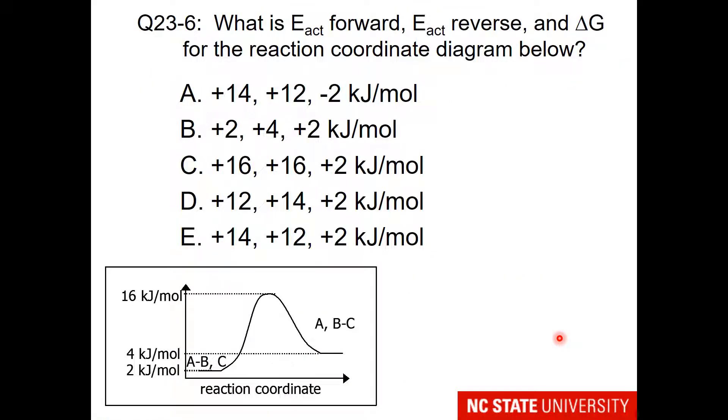Here is a student question for you with a reaction coordinate diagram. I would like to know what is energy of activation forward, energy of activation reverse, and delta G for the reaction coordinate diagram. In case you are a little confused about how to answer this, the energy of activation forward is going to be your energy of transition state minus your energy of reactant.